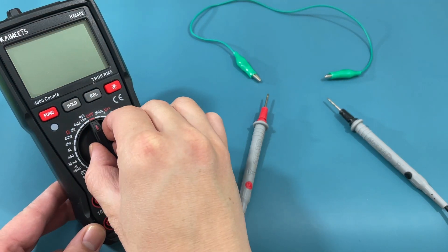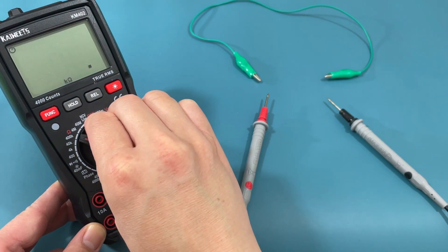To check the wire for continuity, first set the multimeter to the continuity setting.